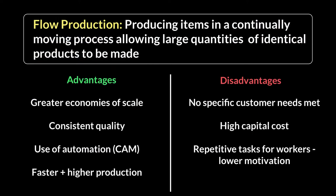The biggest advantage of moving to flow production is economies of scale. As you move from job to batch to flow, you increase your level of output, and as output increases your average cost of production comes down. That's a big advantage — cutting costs allows you to make more profit. Additionally, with machines doing the bulk of production, they are more accurate, error-free, and don't need breaks, so they perform with much more precision than humans.